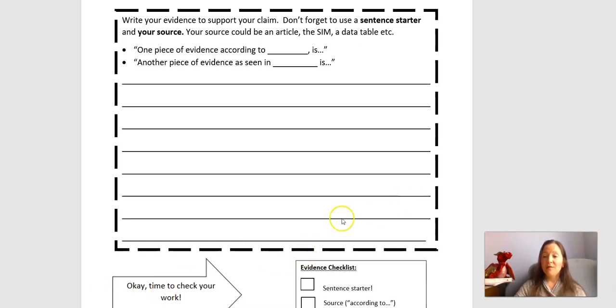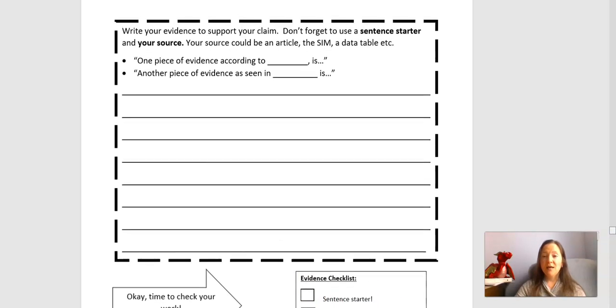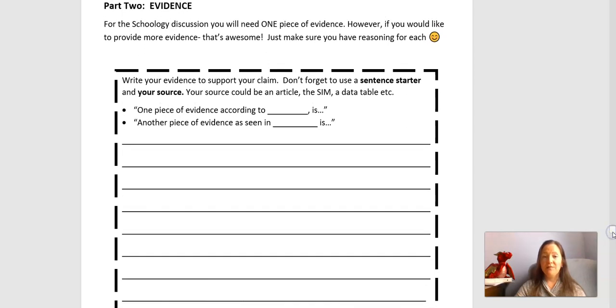And then we also down here, if you'll notice, there's places to check your work in each of these sections. Here's a checklist. Did you do all these things? Hopefully you can say check, check, check. So this is where you put your evidence. And for our activity today, you need one piece of evidence for this activity. Right here it says one, one piece. But you can write more pieces if you want to. That just makes your argument stronger.